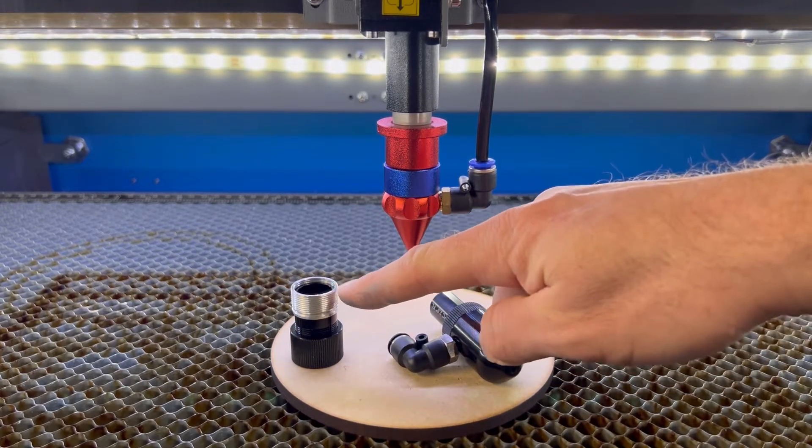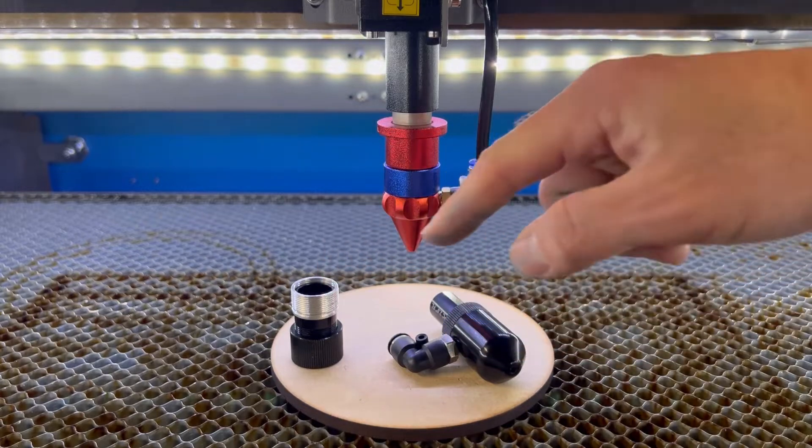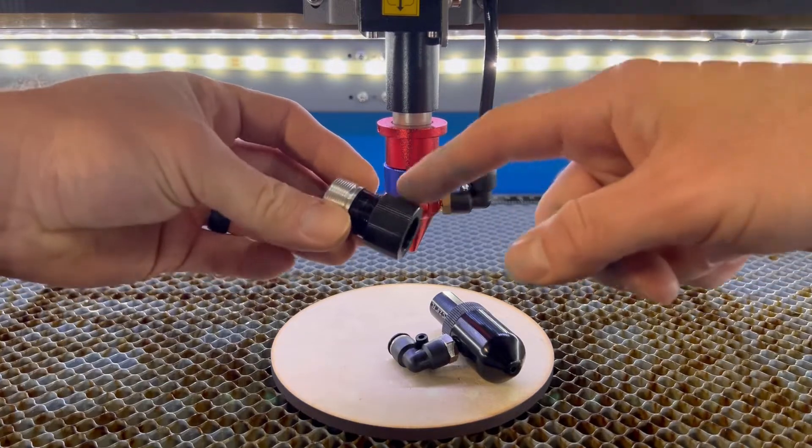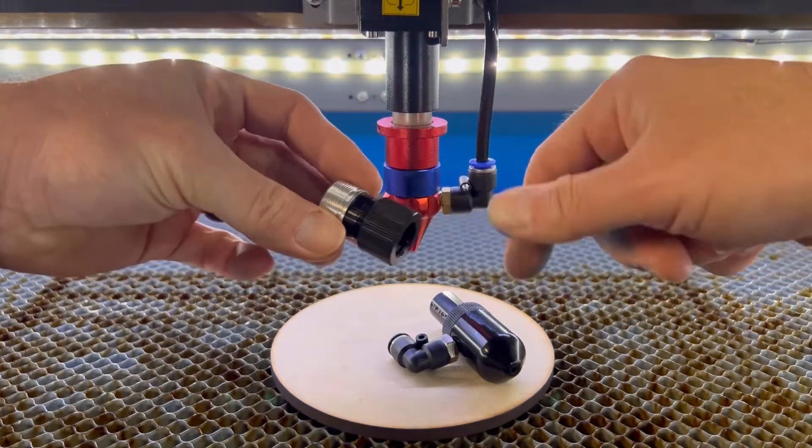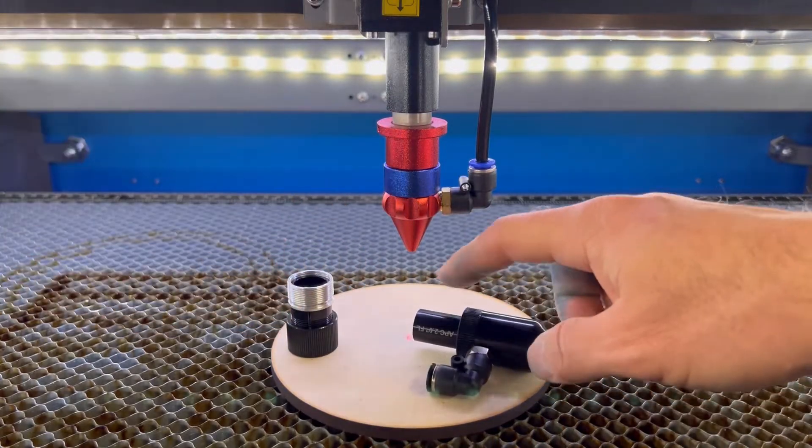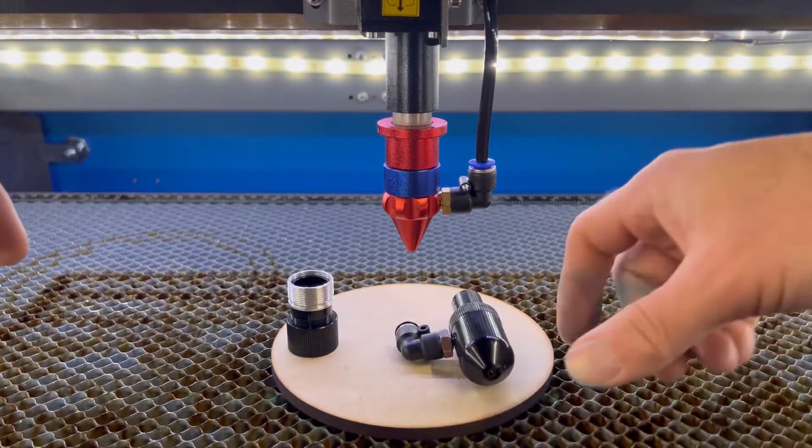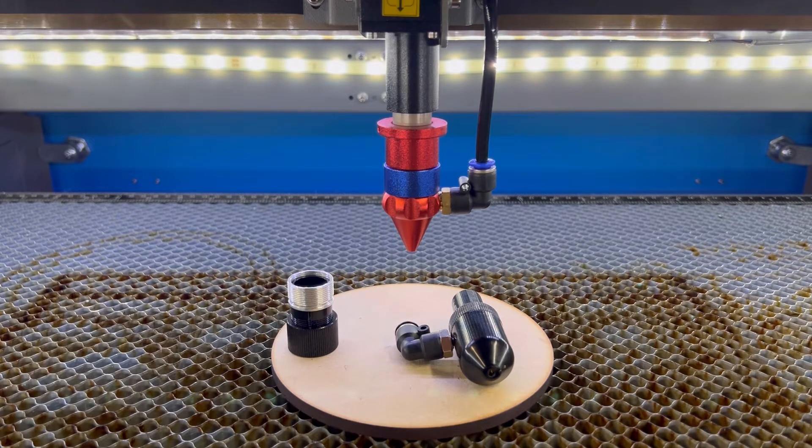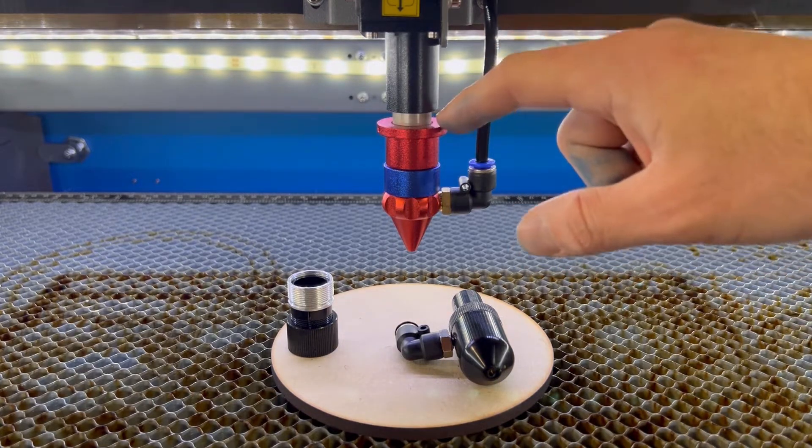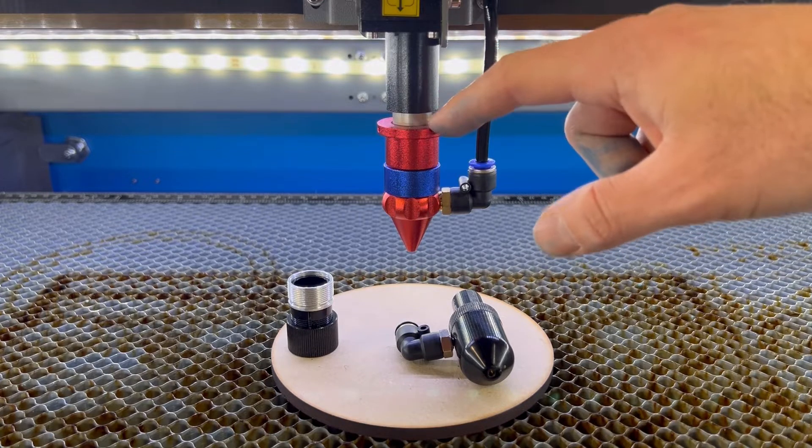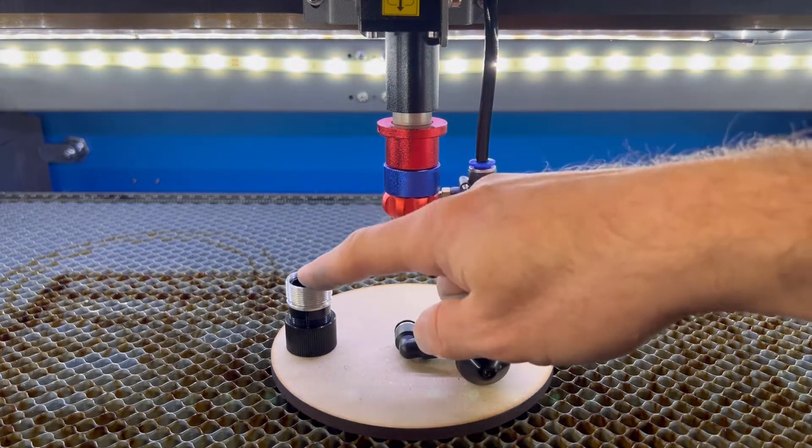American Photonics created this adapter that screws into this portion of the laser head, and it has a collar that will accept a 16-millimeter diameter tube. Most of OMTEC's laser tubes accept a 16.15-millimeter, with the exception of the bigger lasers. These specific laser heads with the integrated autofocus will be 16-millimeter in diameter with the adapter.